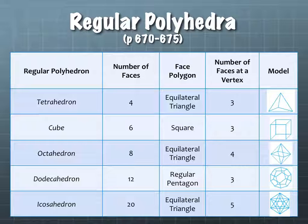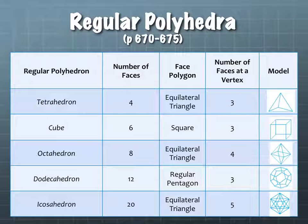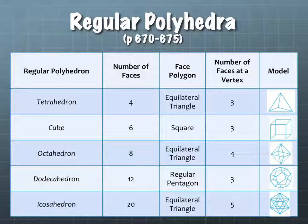The first one is called a tetrahedron. A tetrahedron is made up of four equilateral triangles, so there are four faces. Each of the triangles meets at the vertices, and three of the triangles meet there. So you'll have this shape — the picture's over here on the right-hand side — it looks kind of like a triangular pyramid, or like a dice, but in triangle shapes instead.